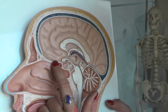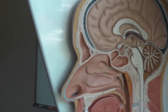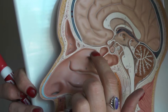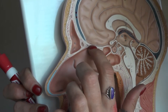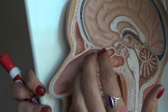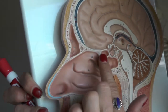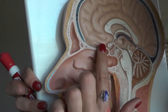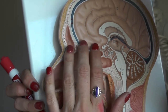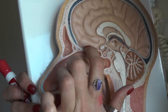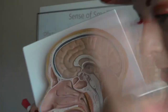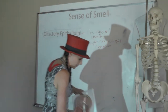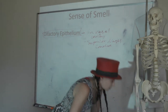This bone is called the ethmoid bone and it has what's called the cribriform plate — all these little holes you can see in the bone. Your olfactory epithelium stretches up through those holes in the cribriform plate to make contact with your olfactory bulb, which takes the smell information back to your primary olfactory cortex.